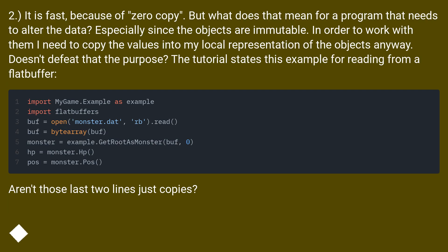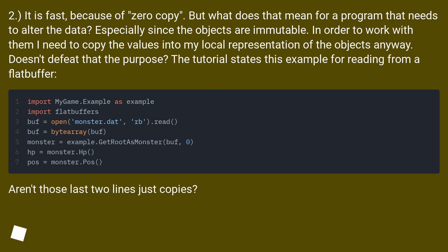Question 2: Flatbuffers are fast because of zero copy. But what does that mean for a program that needs to alter the data? Especially since the objects are immutable. In order to work with them I need to copy the values into my local representation of the objects anyway. Doesn't that defeat the purpose? The tutorial states an example for reading from a flatbuffer — aren't those last two lines just copies?